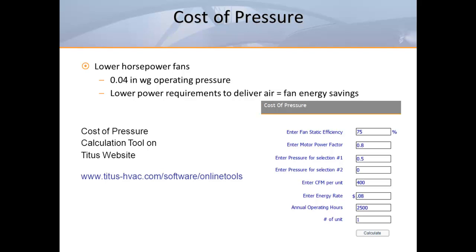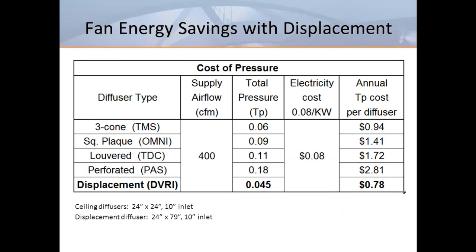Although the cost may first appear small, it's important to take into account the number of air delivery devices found in typical buildings. When you start multiplying the results by hundreds or thousands of units, the numbers start getting very significant. The good news is that displacement diffusers tend to have lower operating pressure than conventional overhead diffusers, so this will help to reduce our fan energy. When comparing the annual operating costs of our most popular ceiling diffusers to a typical displacement diffuser, operating costs could be reduced by more than 70% in comparison to a typical perforated ceiling diffuser. Remember, this savings only applies to the diffuser operating cost, which is a fraction of the total fan energy.